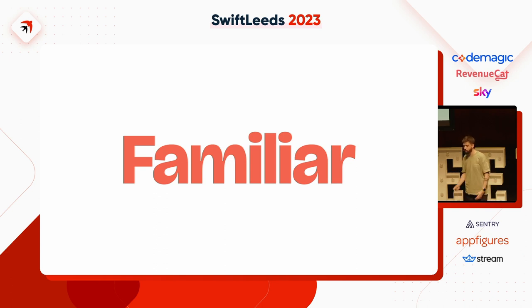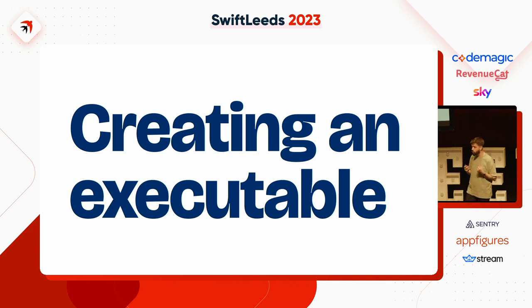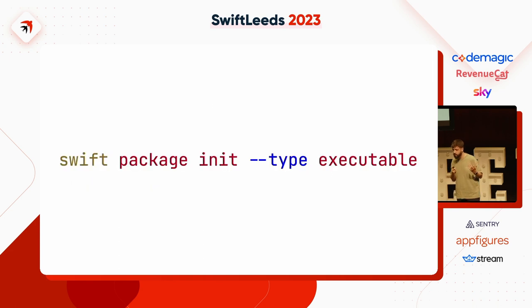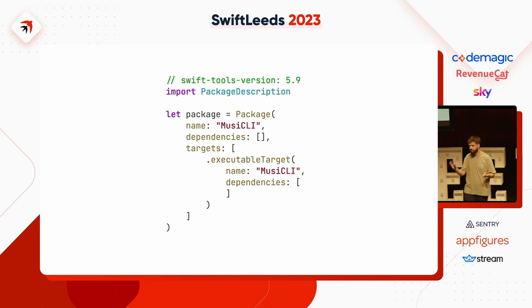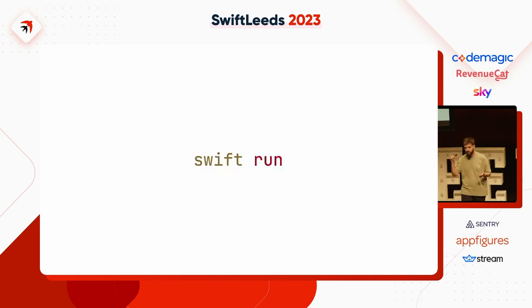Now that we know why it might be a good idea to build tools with Swift, I'm going to show you how to create an executable. The first step I'd thoroughly recommend is using Swift Package Manager. You can jump onto the terminal and run swift package init with a type of executable. This creates a simple Package.swift file and folder structure with a single target — a single file under the sources directory — and a small template that says print hello world.